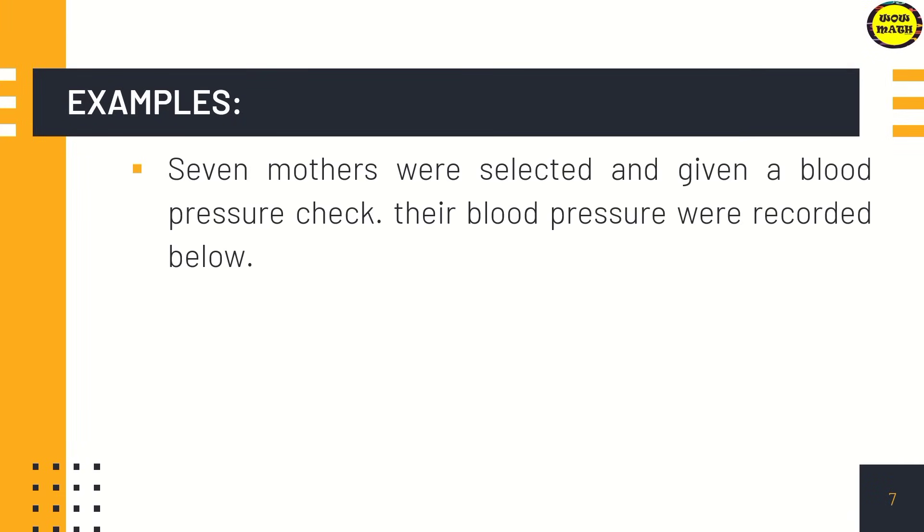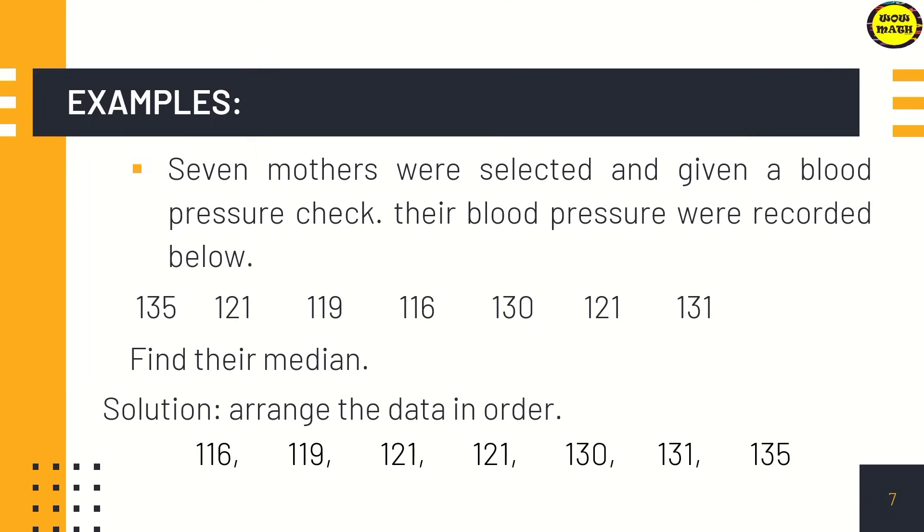For example, 7 mothers were selected and given a blood pressure check. Their blood pressures were recorded as 135, 121, 119, 116, 130, 121, and 131. First, to find our median, we need to arrange the data in order, either ascending or descending. In this case, I arranged the data in ascending order starting from lowest to highest. Let's count the data: 1, 2, 3, 4, 5, 6, 7. So 7 is an odd number. Since it's odd, there is one middle value and that is 121. Therefore, 121 is the median in this problem.